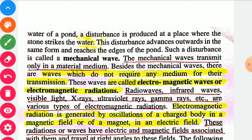Besides mechanical waves, there are waves which do not require any medium for their transmission. These waves are called electromagnetic waves or electromagnetic radiation. Radio waves, infrared waves, visible light, X-rays, ultraviolet rays, gamma rays, etc. are various types of electromagnetic radiations.